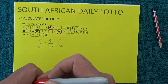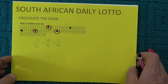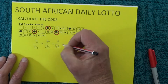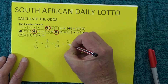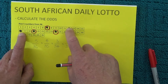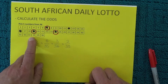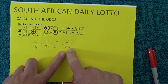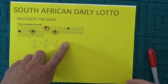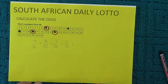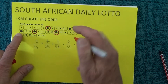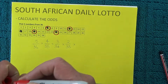When the fourth number is drawn, you have two chances in 33 of matching it — two unmatched numbers remain on your coupon and 33 numbers are left in the barrel since three have already been drawn. I'll randomly mark off another number on the entry coupon to show the fourth number has been matched.